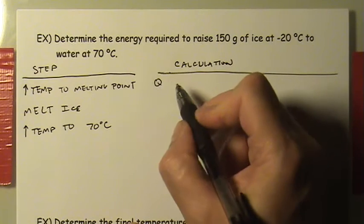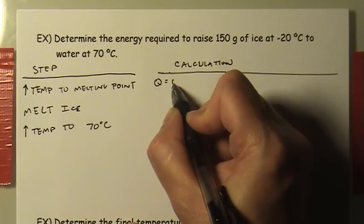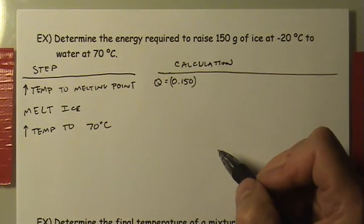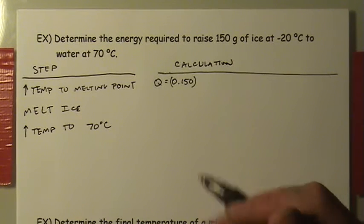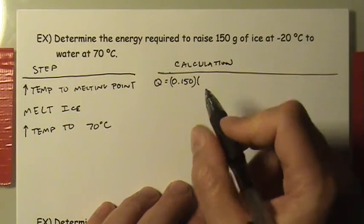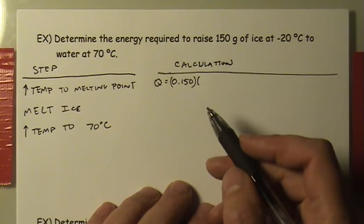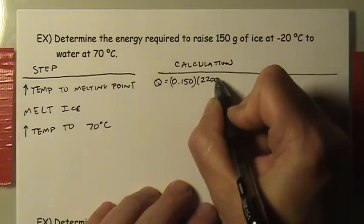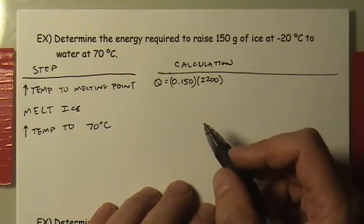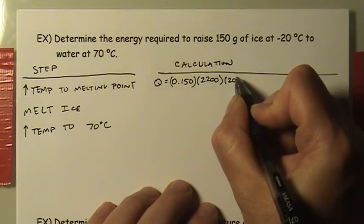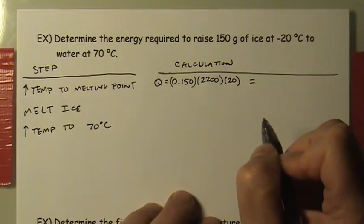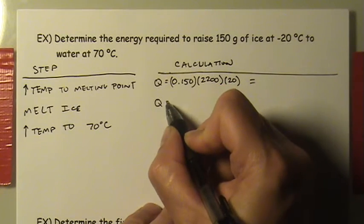Step one: bringing the ice up to the melting point. That is 0.150 kg of ice — it's important to remember that specific heats and latent heats use kilograms. The specific heat capacity of ice, from the previous video, is 2,200 joules per kilogram per degree. We need to raise the temperature by 20 degrees, from negative 20 up to 0°C.